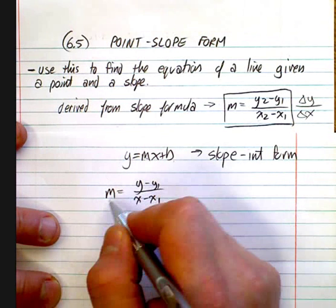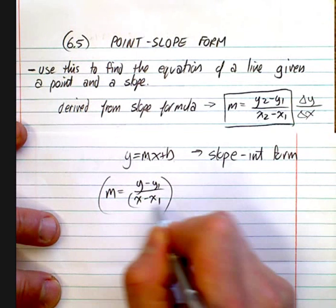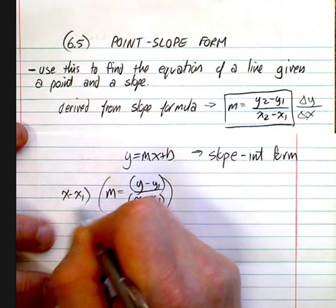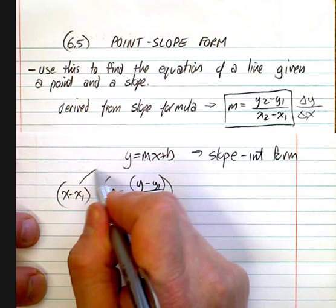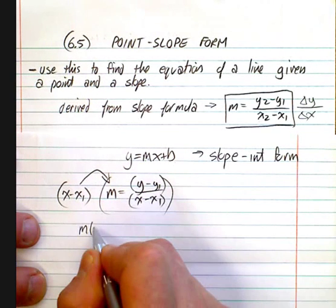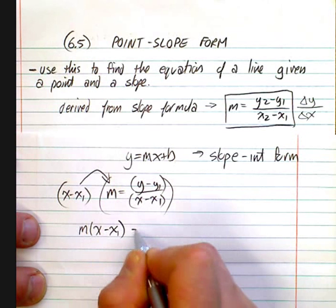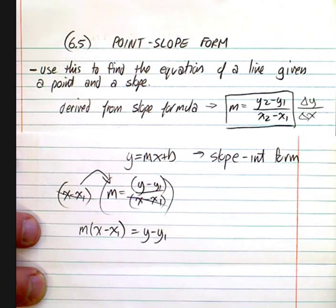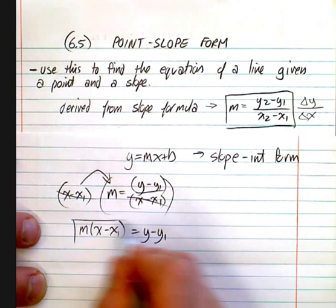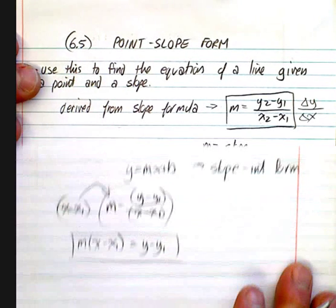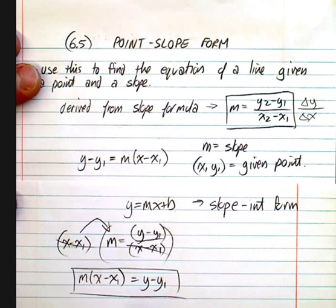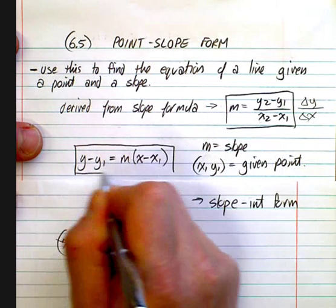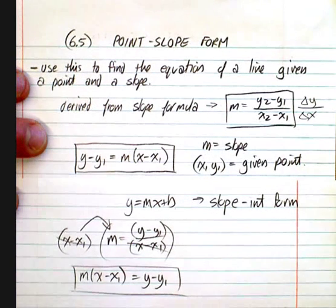Think about algebra — how would we get rid of this denominator? Well, what we'd end up doing is multiplying by that denominator. When you multiply that out, you get m times x minus x1 is equal to y minus y1, because that cancels. And this is indeed the formula we're looking at, but the other way around. This is our point-slope form.